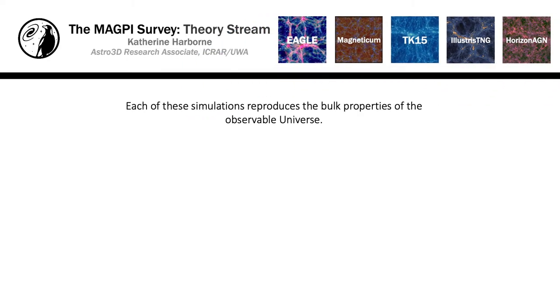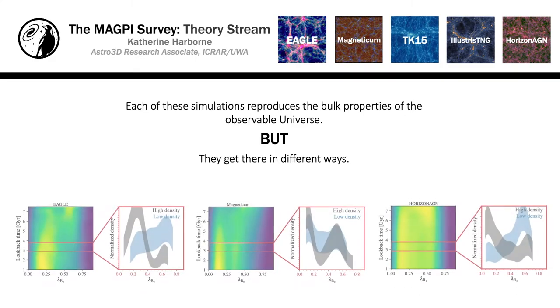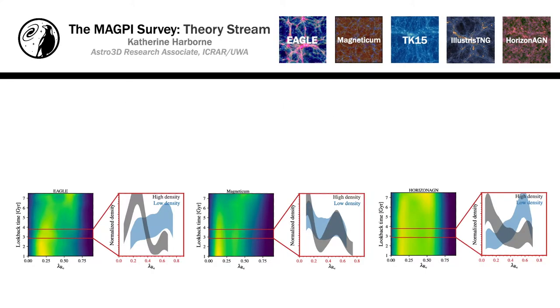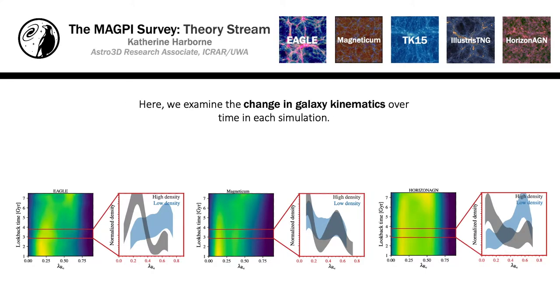While all of these simulations broadly reproduce the observable universe, they get there in very different ways. If we plot the evolution of kinematics in each simulation, as shown here, we see very different stories.